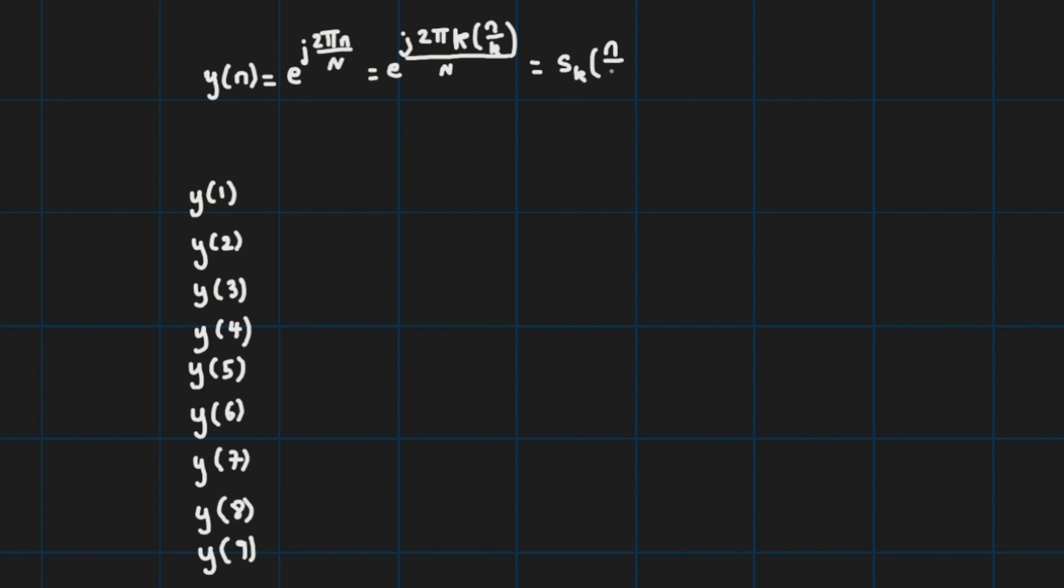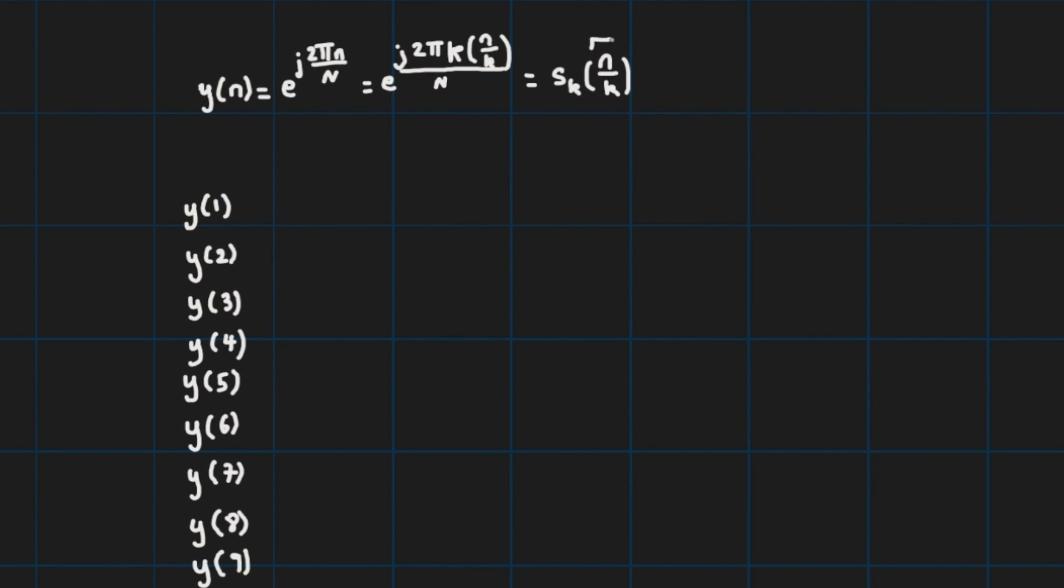where n over k this is super important, my n over k this ratio should be an integer. This guy should be an integer because discrete time signals are defined for integer arguments.